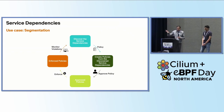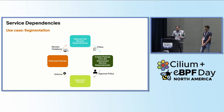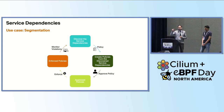The first use case is segmentation. The way we are doing it is: we discover the dependencies, use those to create policies, which go through approval from InfoSec, and once the policy is approved, it gets enforced. We then continuously monitor all violations, and if there are new dependencies discovered while policies are being enforced, we feed them back into the same system to create new policies.